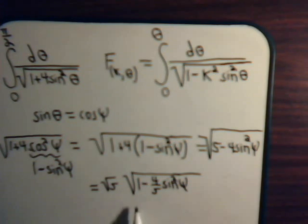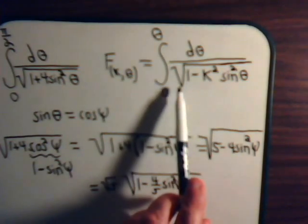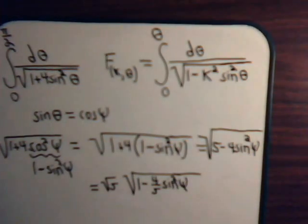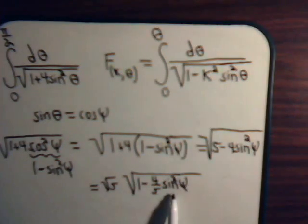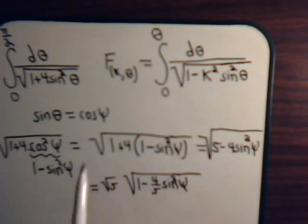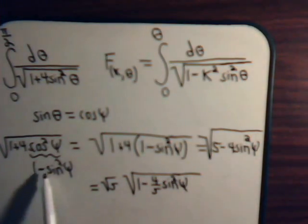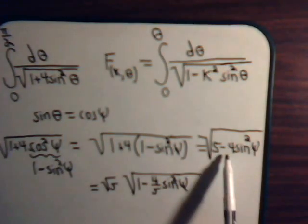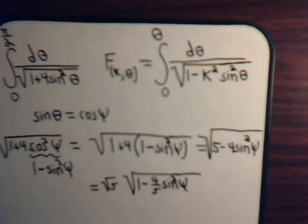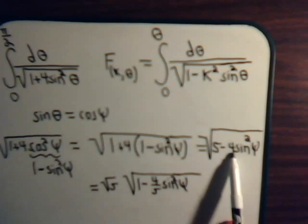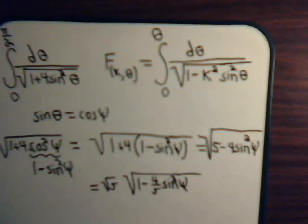So now the denominator is commensurate with the standard form — the coefficient four-fifths is less than one, we have a one here, and a minus sine squared term instead of the plus sine squared term we had originally. The key was to make a substitution where this is the cosine, giving us cosine squared which we write as one minus sine squared, ultimately giving us the minus sine squared term. We were also fortunate that factoring out the five gives a one, and that the coefficient four-fifths is less than one, so the denominator is now in standard form.